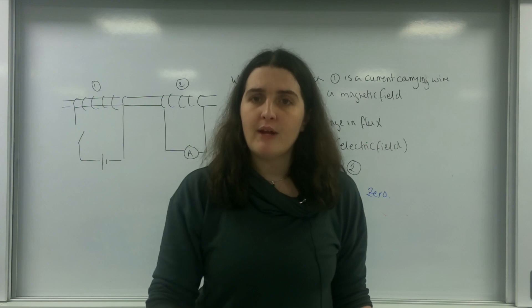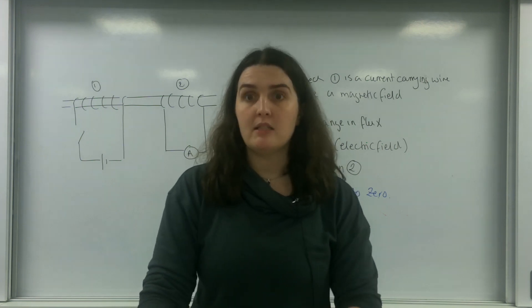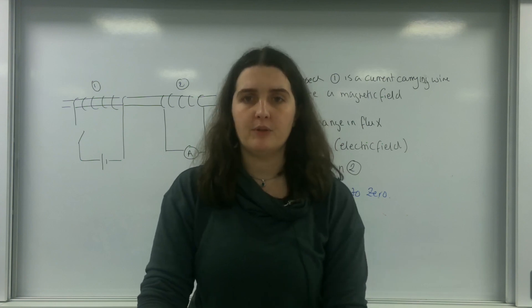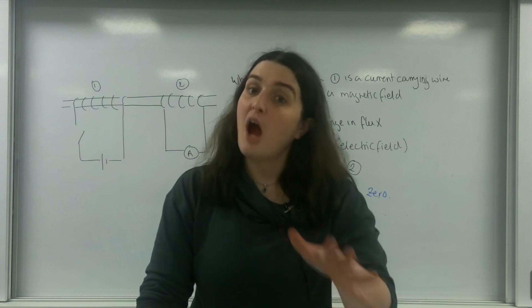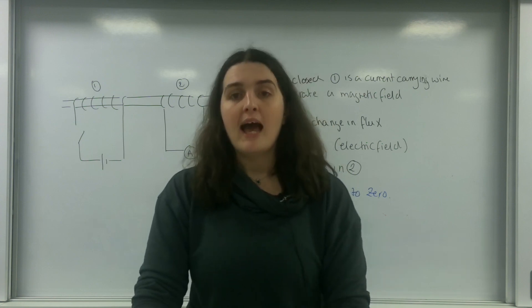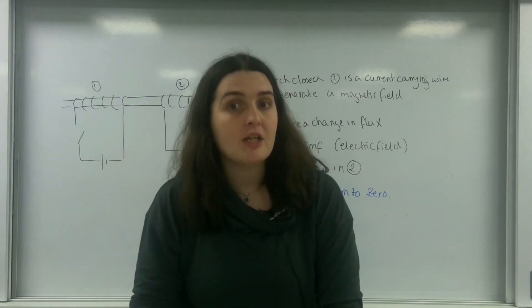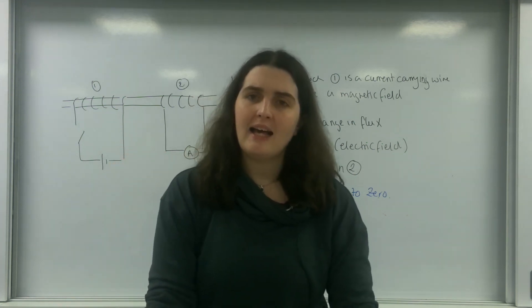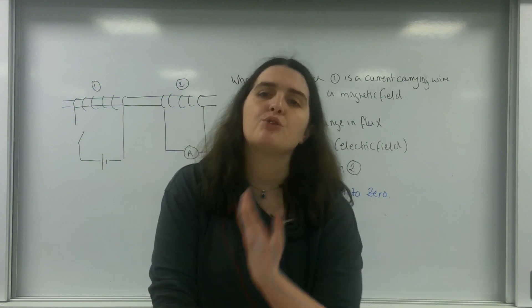One wire generates a magnetic field. Another wire experiences a change in a magnetic field, which induces an EMF in it, an electric field. This electric field allows current to flow. As long as the initial field has a changing magnetic field and the other one experiences that change in flux, current will continue to flow.